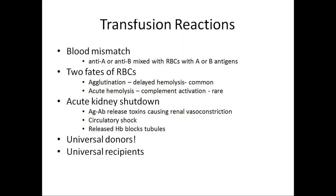Transfusion reactions from mismatched blood can be immediate or delayed. Delayed reactions include anemia and jaundice. Immediate reactions include agglutination of RBCs and excessive hemolysis. Acute kidney shutdown can occur through antigen-antibody reactions that release toxins causing renal vasoconstriction. Circulatory shock can also result from excessive hemolysis reducing the RBC count, which in turn reduces blood volume and blood pressure.